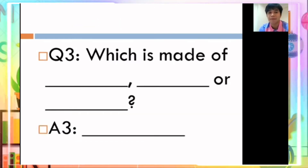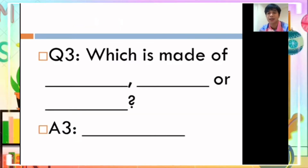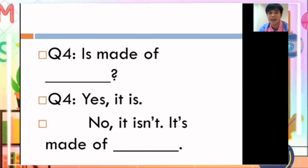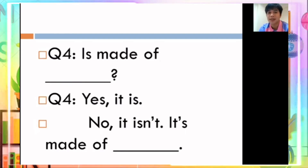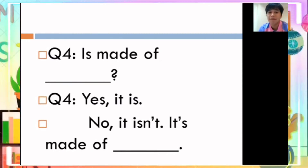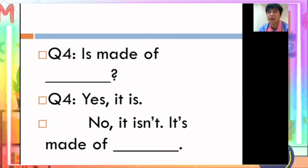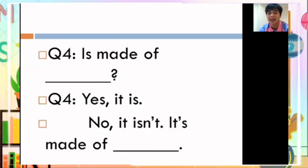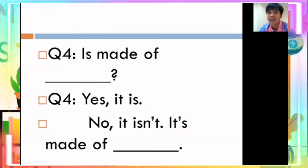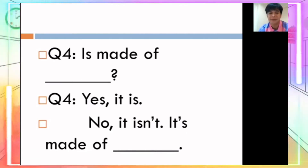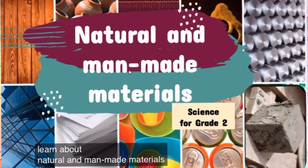Sentence structure number three — which is made of blank, blank, or blank? You are going to answer: blank. Sentence structure number four — is it made of blank? You are going to answer: yes, it is, or no, it isn't. Are you ready for our topic today? Let's start our lesson on natural and man-made materials.